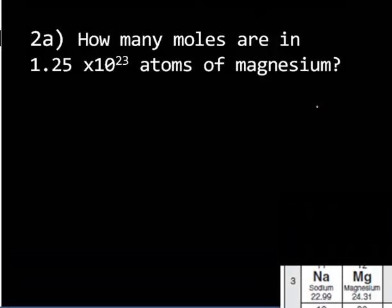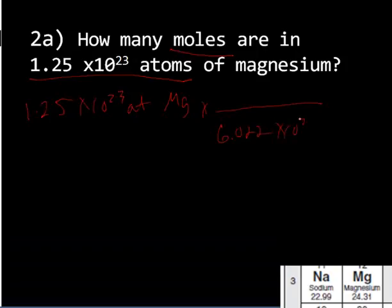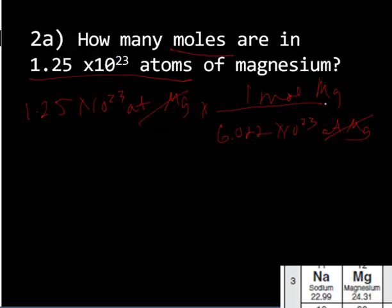In this example we're looking at how many moles are in 1.25 times 10 to the 23rd atoms of magnesium. I know there are 6.022 times 10 to the 23rd atoms of magnesium in one mole of magnesium, so I can cancel out atoms of magnesium, I'm left with moles of magnesium. If I divide 1.25 times 10 to the 23rd by 6.022 times 10 to the 23rd, I get 0.208 moles of magnesium with three sig figs.